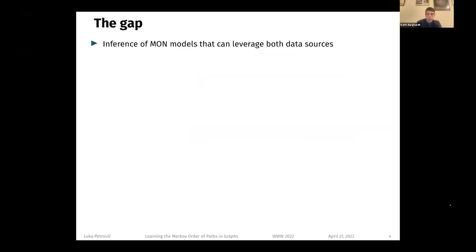And second, which is a consequence of the previous problem, to determine the optimal order, the method assumes that all links are observed at least once, which does not have to be the case in real applications. The first question is how to infer models for paths and leverage both the information of constraints and the pathway data.